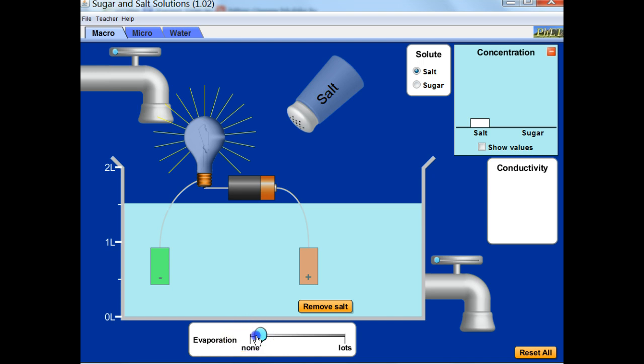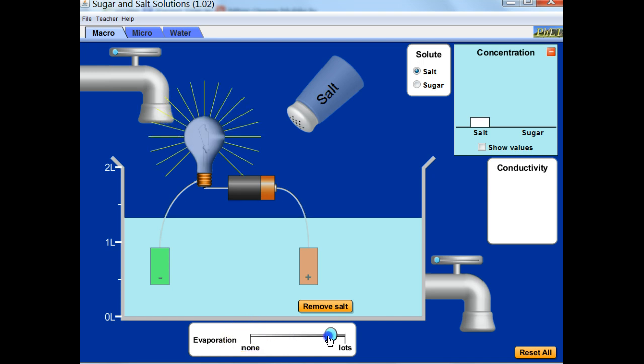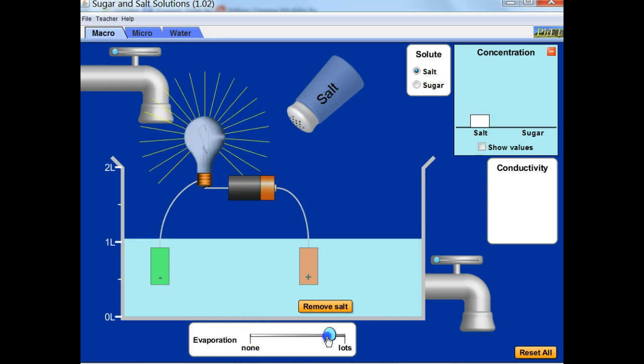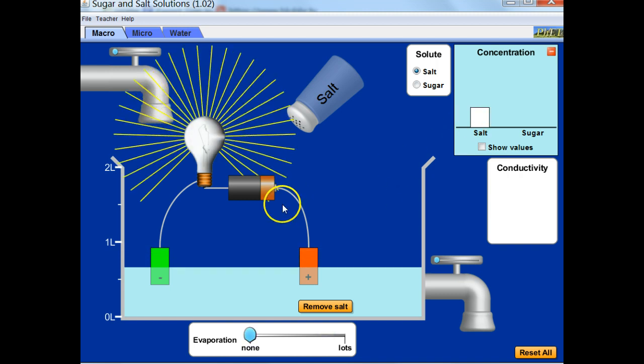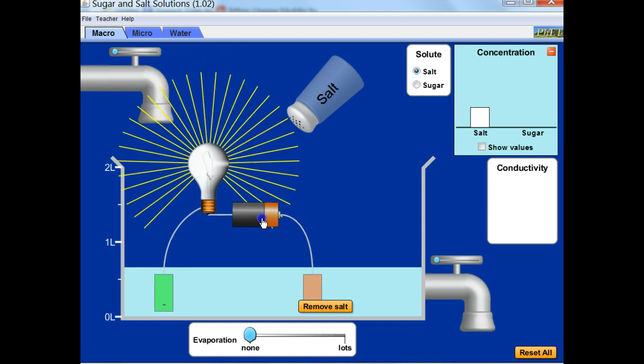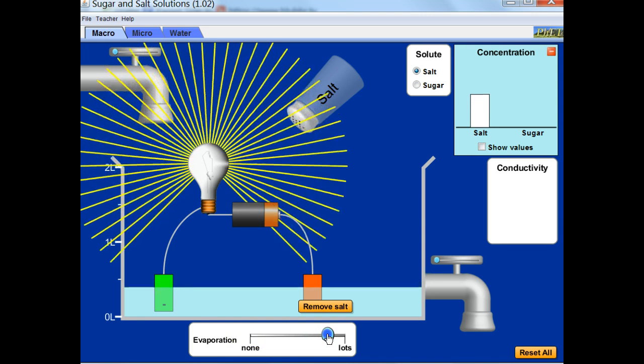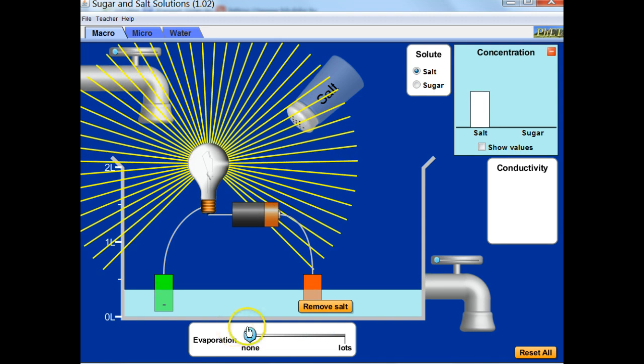The concentration increases, as you can see in the upper right hand corner here. The light gets brighter and brighter. So salt water is an electrolyte. Let's try sugar water now. I'm going to dump in my sugar.